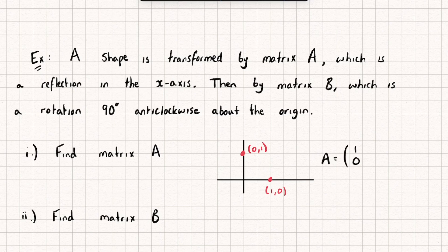And the point (0, 1), well that's reflected down and it's going to become the point (0, -1). So that's my matrix A.